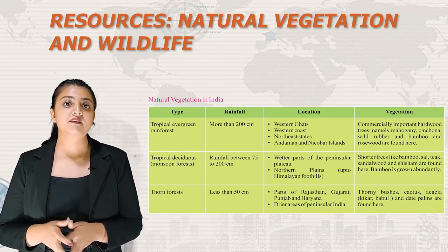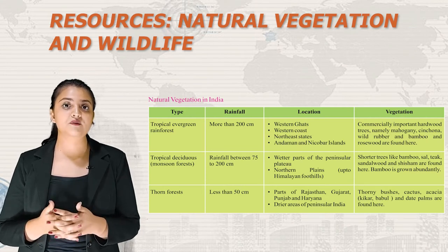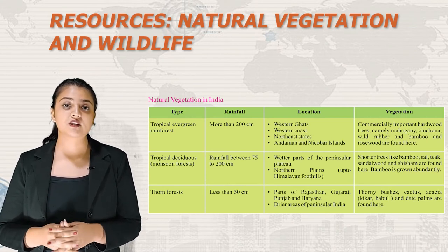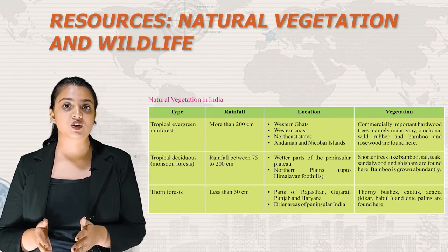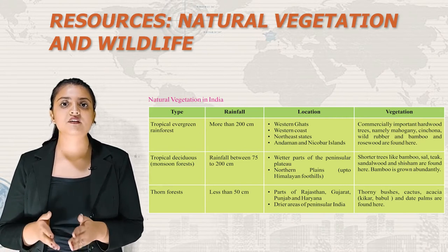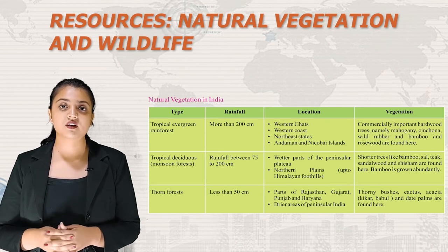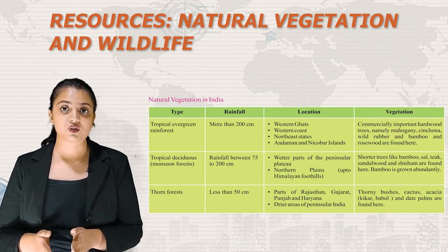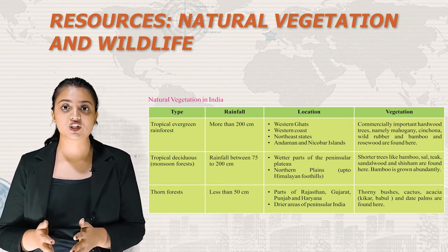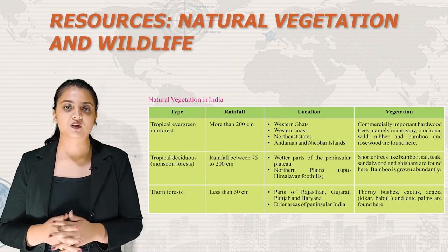Thorn Forest in India receives rainfall of less than 50 cm. It is located in parts of Rajasthan, Gujarat, Punjab, Haryana and rare areas of Peninsular India. Vegetation here includes thorny bushes, cactus, acacia (kiker and babul) and date palms.